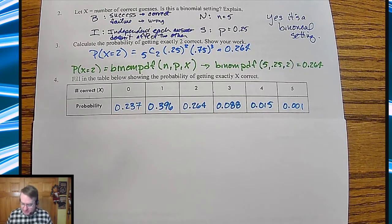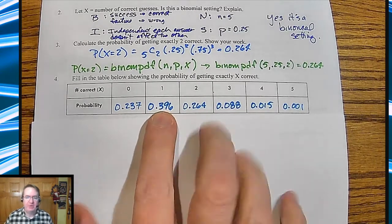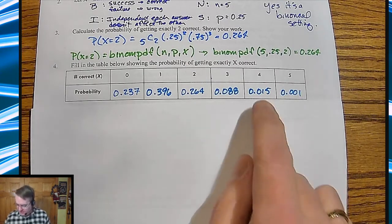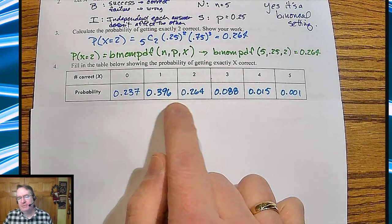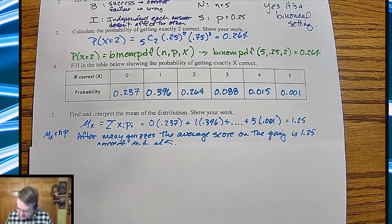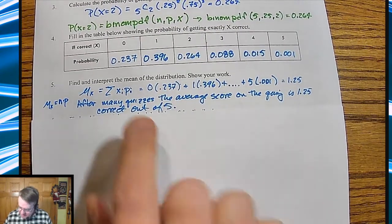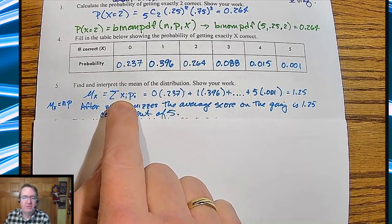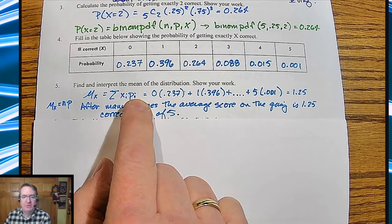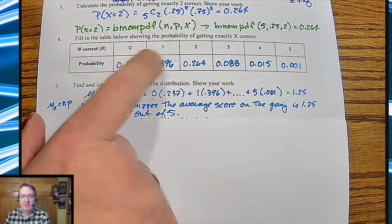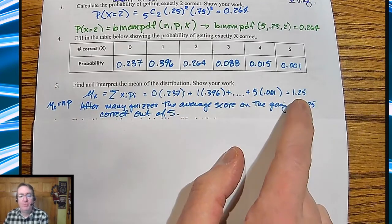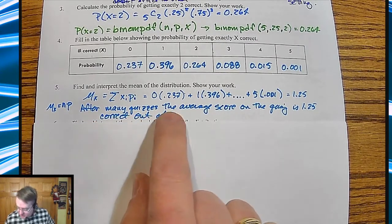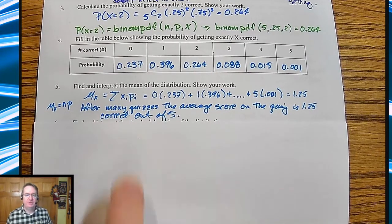From there, we've got a series of questions. The most that people are going to get — since the probability is 0.25 — the nice part is they didn't make it four choices, because if it was four you'd see a lot of ones. Since we have five, it blends a bit. Find and interpret the mean of the distribution. The mean is the expected value — the sum of your values times the corresponding probabilities: 0 times 0.237, plus 1 times 0.396, plus 2 times 0.264, and so on — and you get 1.25. After many quizzes, the average score is 1.25 out of 5.